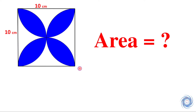Here we have to calculate the area of the shaded region — that means the blue colored region. We have a square of side 10 cm and we have to find the area of this blue colored region.